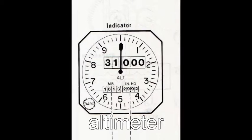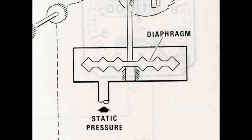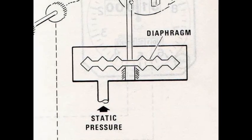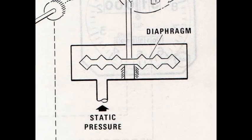First we have the basic altimeter. The basic altimeter's primary measuring device is a diaphragm.